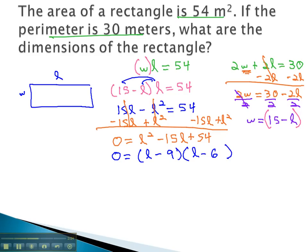Once it's factored, we can set each factor equal to 0: l - 9 = 0 and l - 6 = 0. Adding 9 to both sides tells us our first option for l is 9. Adding 6 to both sides tells us the second option for l is 6.